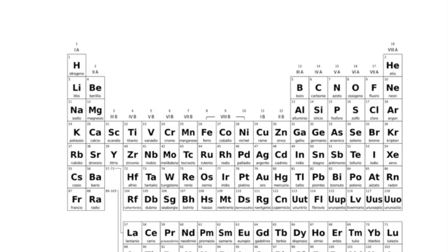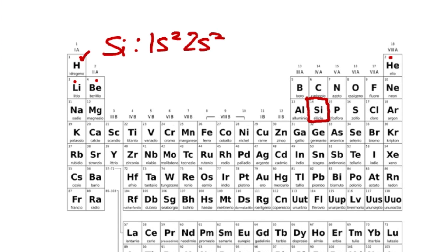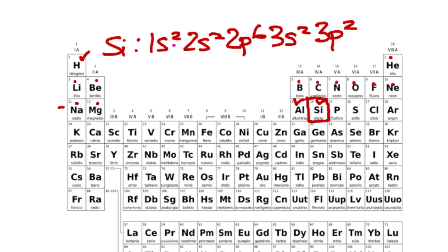Let's try another example — silicon, which has 14 total electrons. Write its chemical symbol with a colon and count from the top left: 1s2, 2s2, 2p6, then hit the third energy level — 3s2, and then 3p1 and 3p2. So 2 plus 2 plus 6 plus 2 plus 2 equals 14 total electrons.